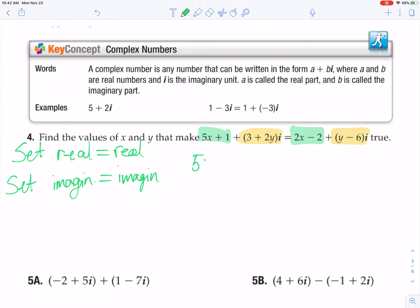5x plus 1 equals 2x minus 2. You can solve that. That's super easy. Minus 2x minus 2x. 3x. I'm going to go ahead and subtract 1 while I'm at it. Equals negative 3. x equals negative 1.